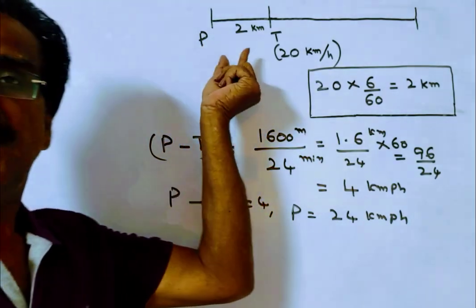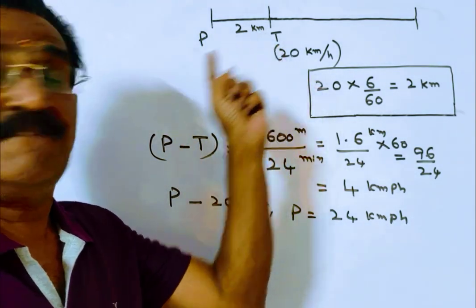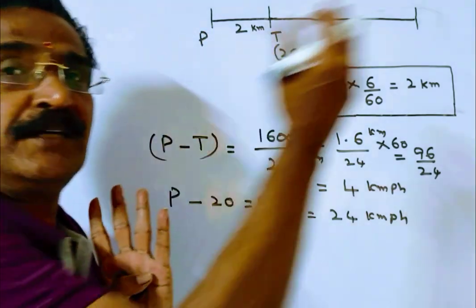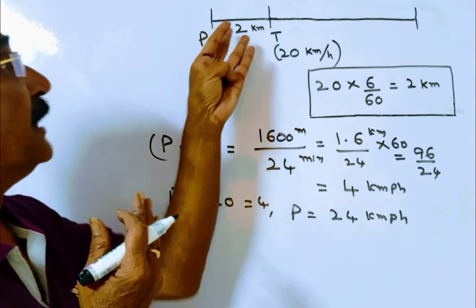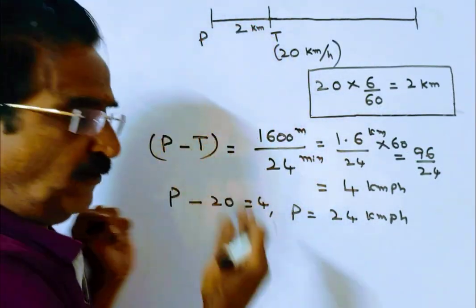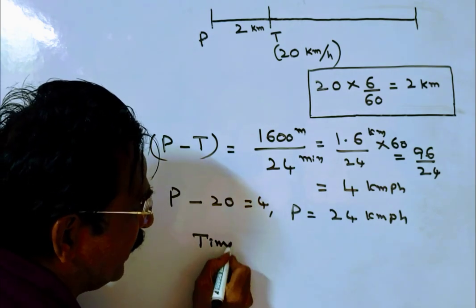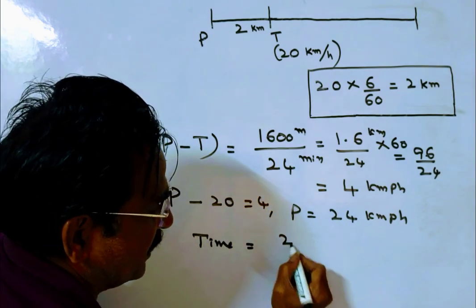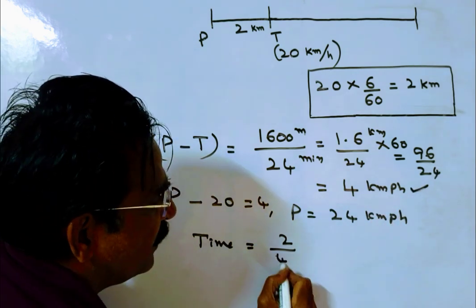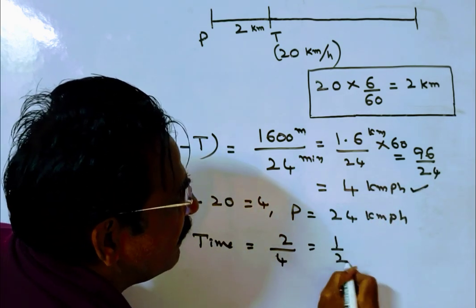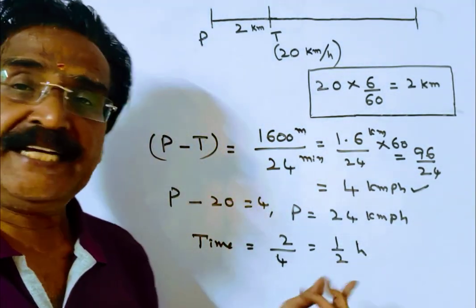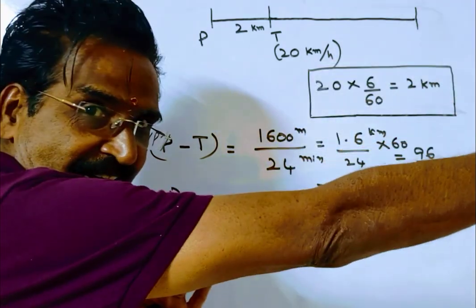The initial distance between police and thief is 2 km. The time taken to catch the thief is equal to the initial distance divided by relative velocity: 2 km divided by 4, which equals half an hour. So from the time of chasing, it takes half an hour to catch the thief.